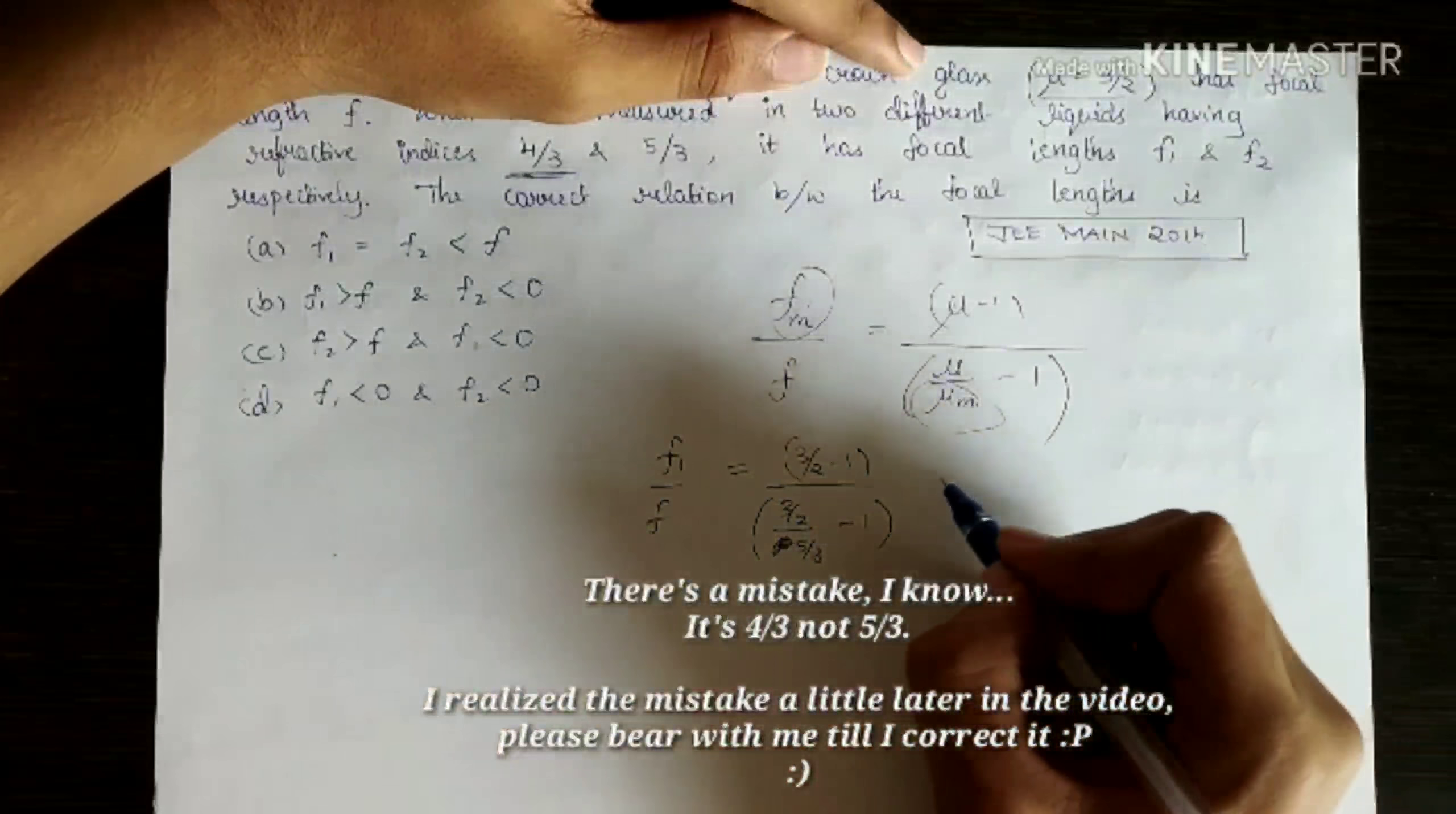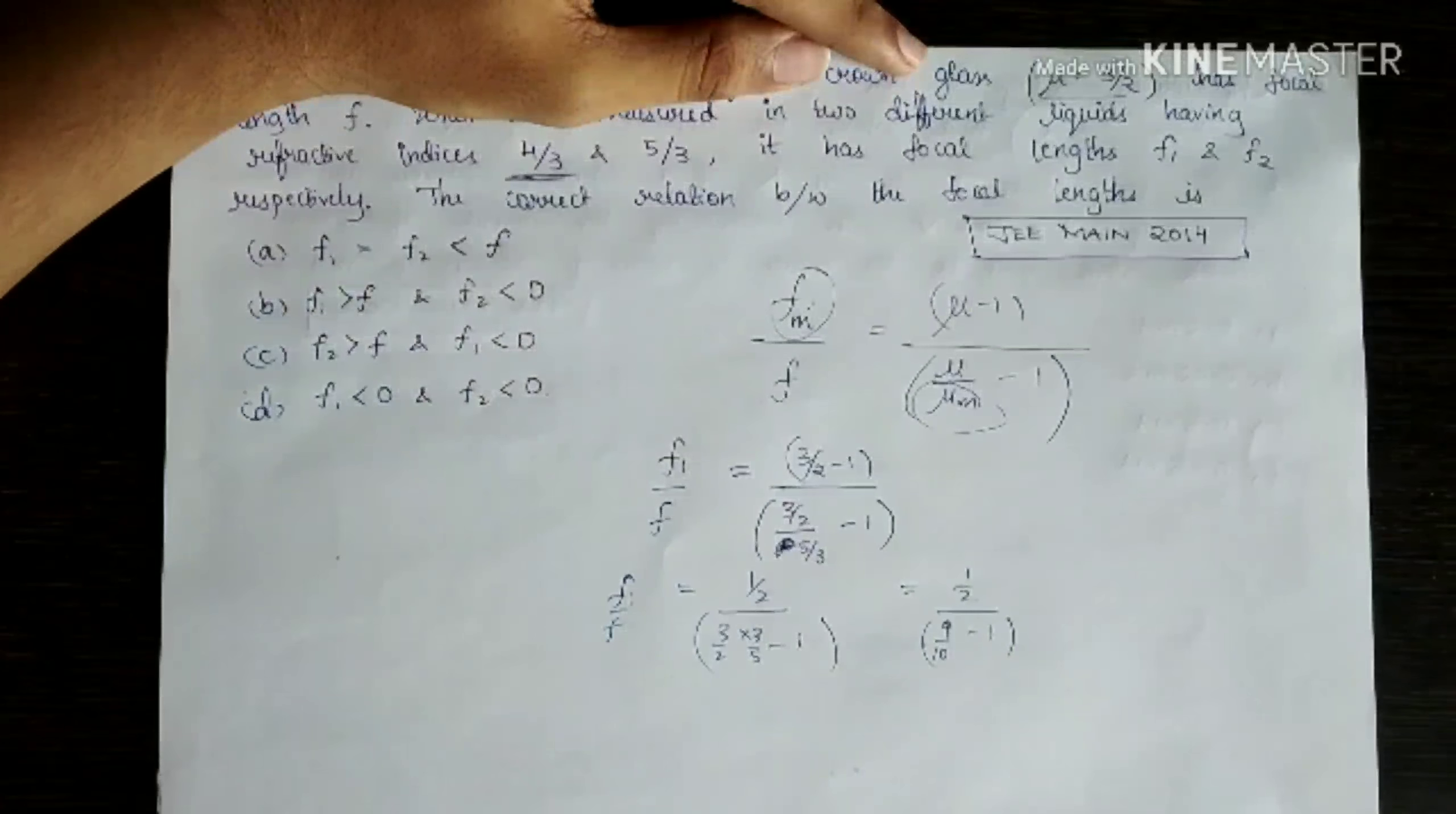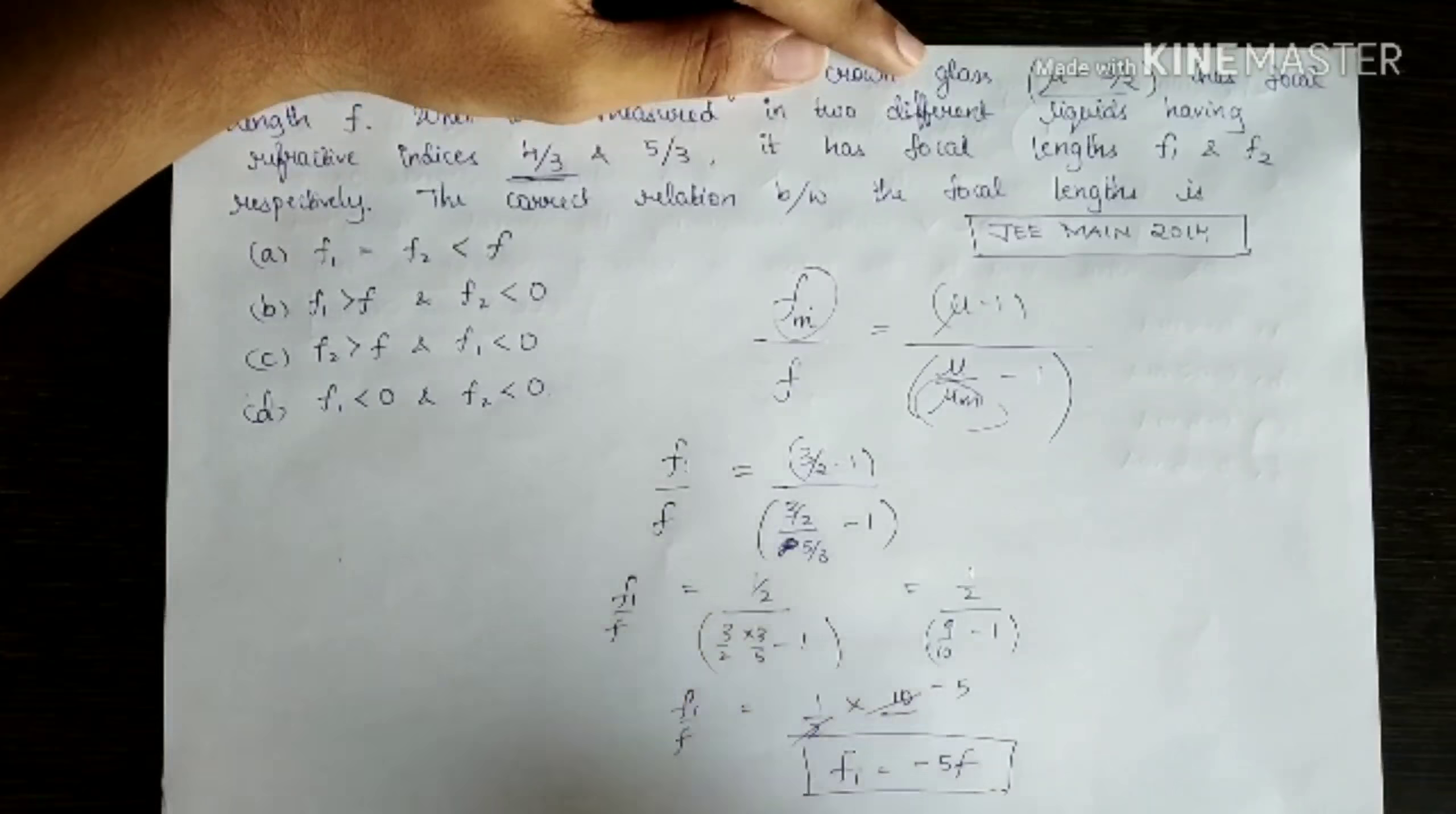Now I have F1/F. Let me simplify this: 1.5 - 1 is 0.5 divided by 3/2 × 3/5 - 1. I have 1/2 divided by 9/10 - 1, which is 9/10 - 1. In this case, I get F1 divided by... wait, this is incorrect. F1 = 4F is what I should get in this case.